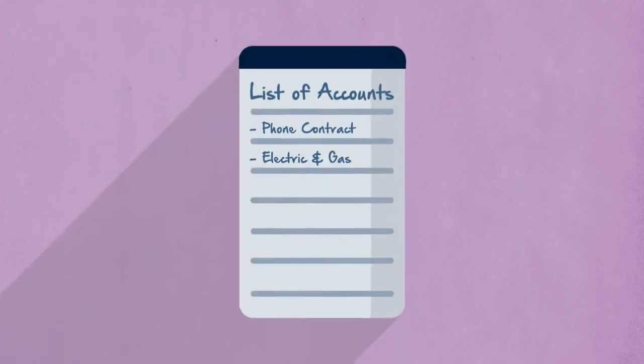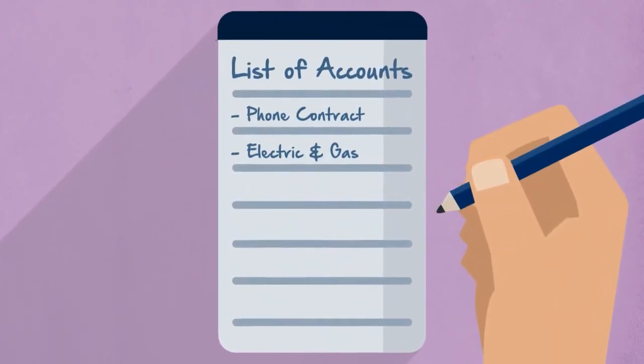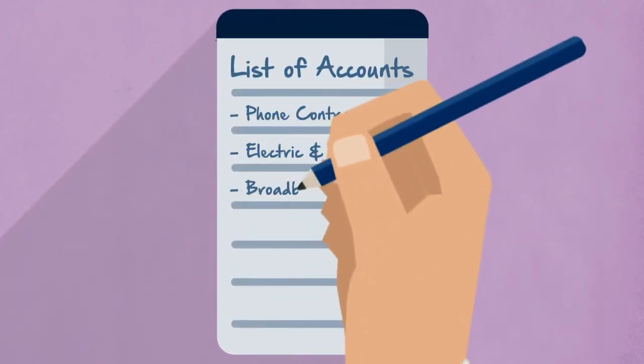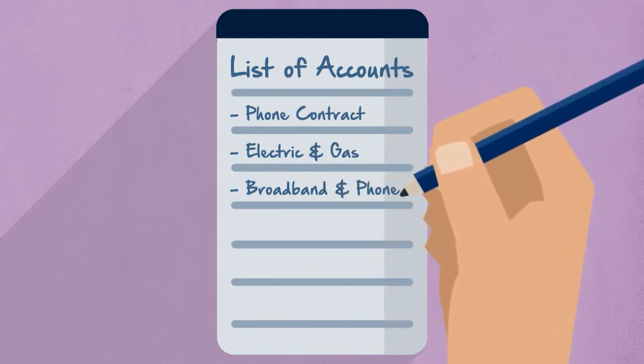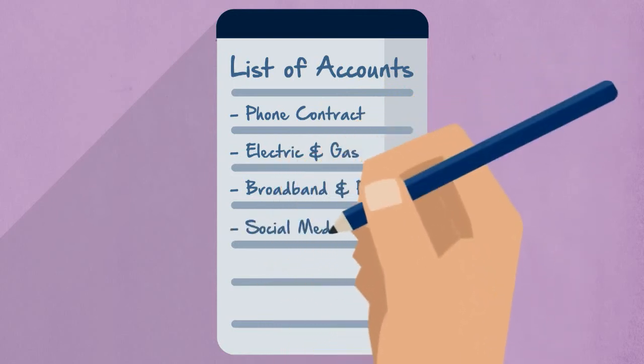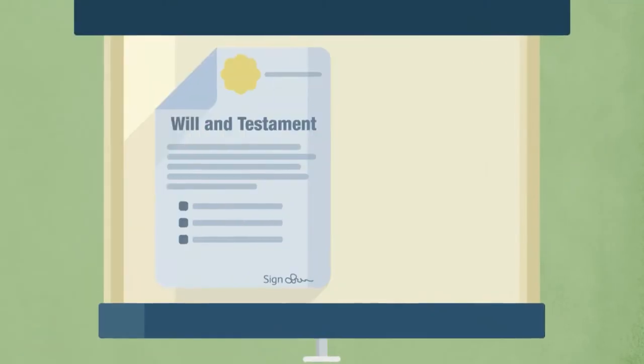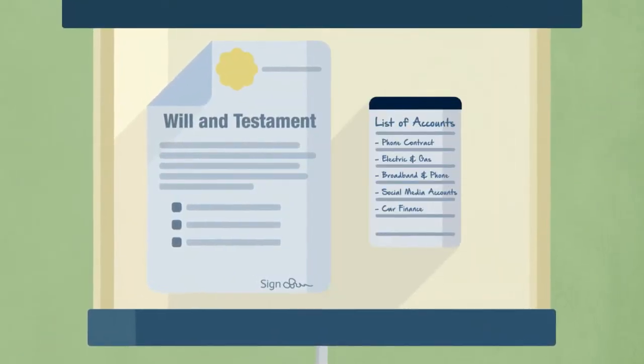you can help your loved ones in the future by maintaining a list of all the organisations that you hold online accounts with, so your family and friends can contact these providers to have your account closed down. You could even think about storing this list alongside your will.